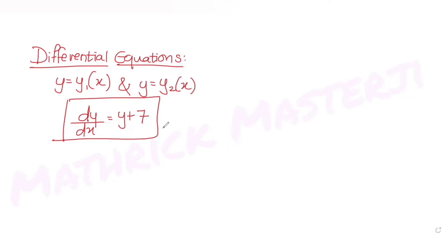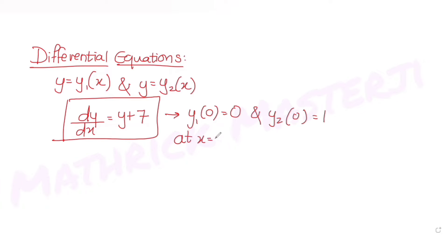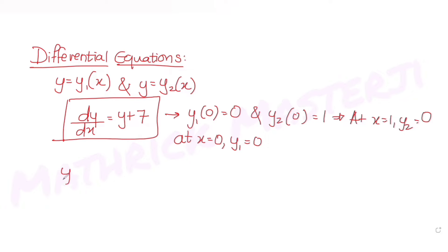The initial conditions are: y1(0) = 0, and y2(0) = 1 — meaning at x = 0, y1 = 0, and at x = 0, y2 = 1. The question then asks where the curves y = y1(x) and y = y2(x) both intersect.